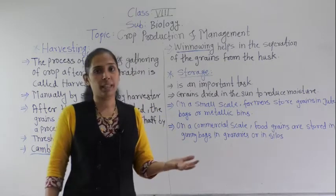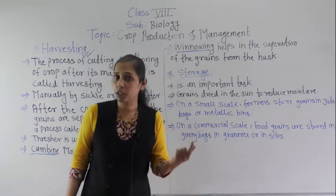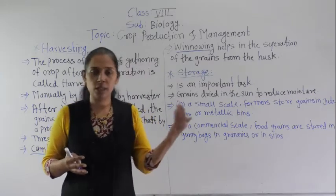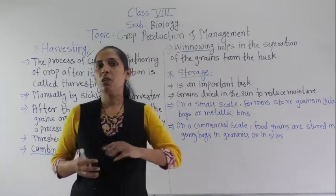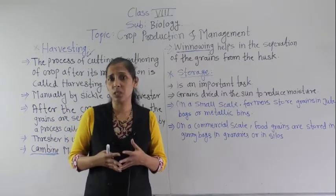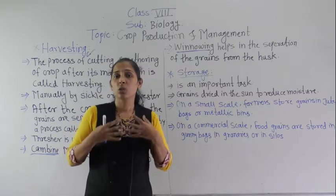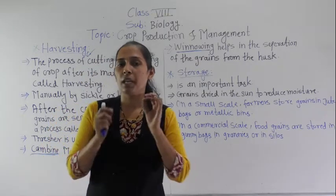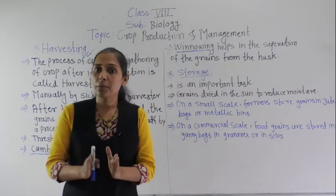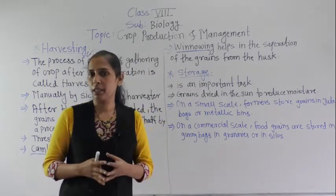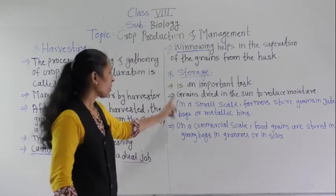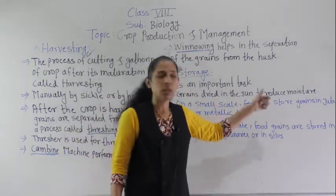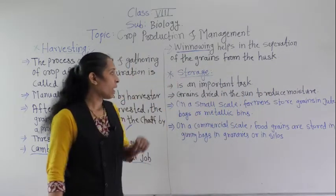Before storing the grains, they should be dried properly in the sunlight. On a small quantity this is done in sunlight, but on a commercial basis, machines are used to blow very warm air on the grains to dry them. Drying before storing helps to protect the crops from pests, insects, and certain types of microorganisms. The grain is dried in the sun to reduce moisture.